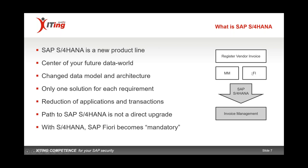For example, in ECC you can register a vendor invoice through both the MM module and the FI module — there are MM transactions and FI transactions that allow you to do that. In S/4HANA that's no longer the case; there's one solution now called invoice management. This basically means a reduction of applications and transactions which we have to bring back to our role design, giving users the new transaction codes or a Fiori application to complete the task. The migration to S/4 is not a direct upgrade — it's a new system, with different approaches like greenfield, brownfield, or bluefield.